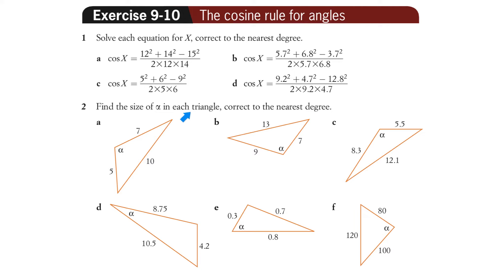To find the size of alpha in each triangle, correct to the nearest degree. Good. Well, you can find that because we've got the three sides. We can find that because we've got the three sides. We can find that one. We've got the three sides. Good. Three sides. Good. And great.